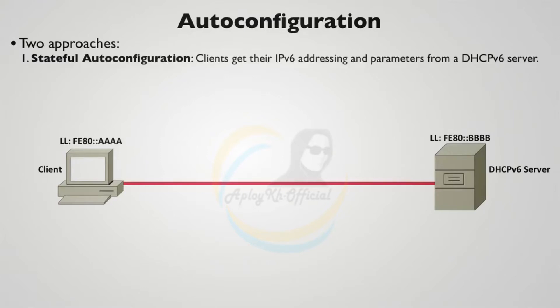One approach is called the stateful auto configuration approach. This works a lot like IPv4 does when we're using a DHCP server, except this time we're going to be using a DHCP version 6 server.